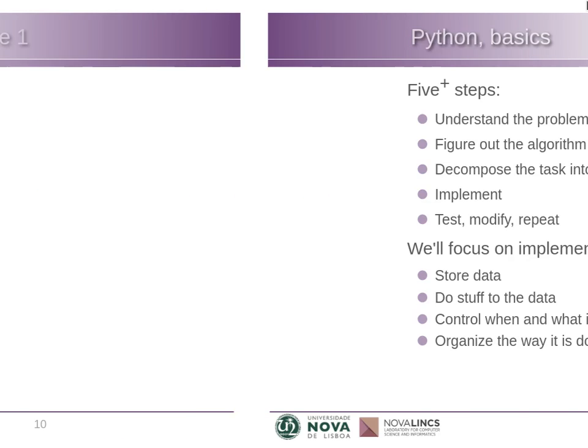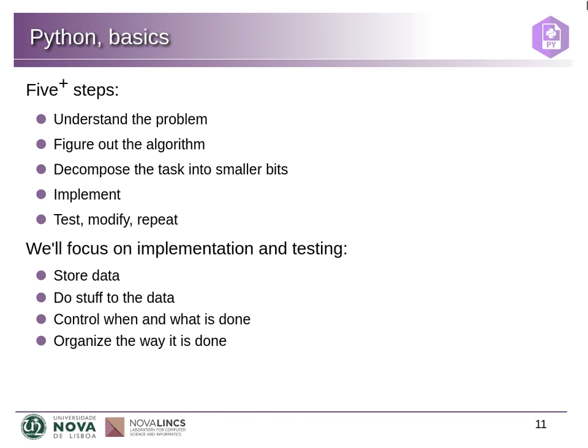Let's see what we're going to do to solve these problems and how to write code. In general, the first step when writing code is to understand the problem — that's the only way we can think about how to tell the computer what we want. Then, once we understand the problem, we need to figure out the algorithm — a finite set of steps that produce the outcome we want. Then we usually decompose the task into smaller bits and repeat this until we have all the pieces that we can fit together. Then we implement each piece, test, and start building the final solution.